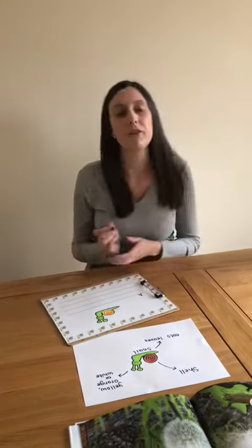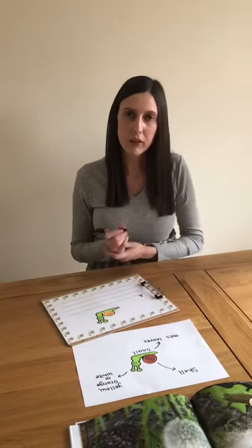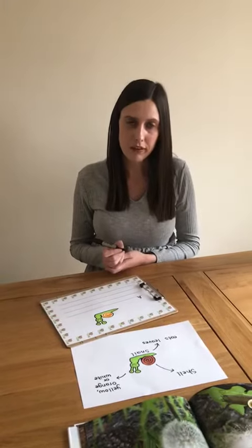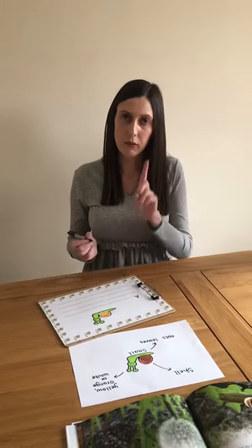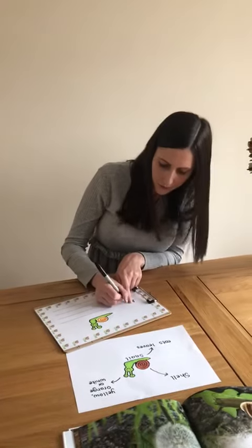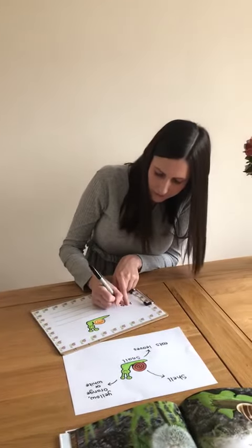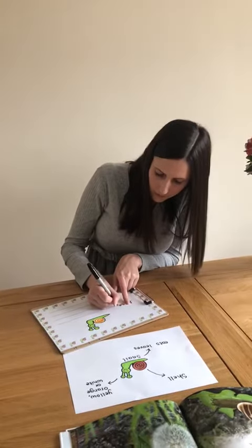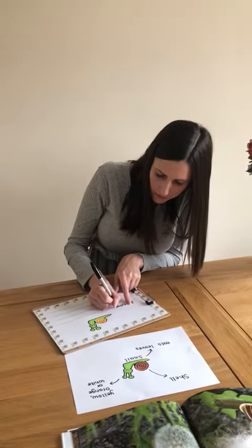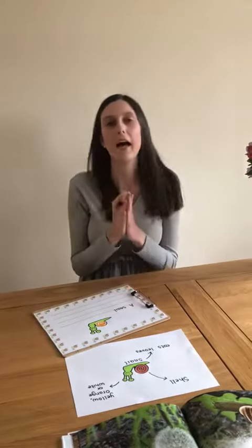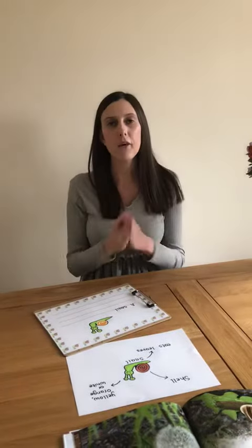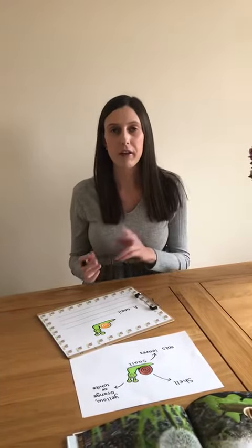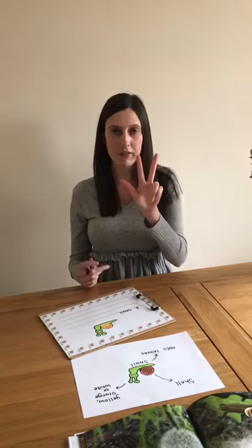So we're going to write A. Now we've already written the word snail on our word map, so we can use this to help us. So we're going to remember our finger space. A snail has, and for this word we're going to use our three thread fingers. H,